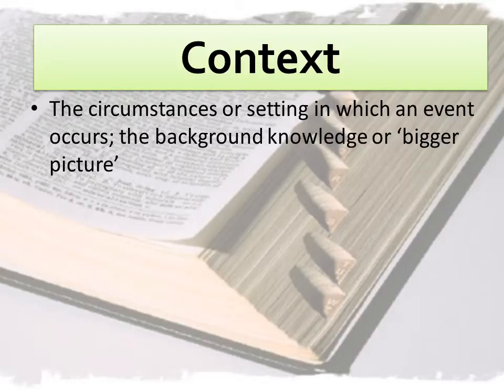Context is the circumstances or setting in which an event occurs. It's the background knowledge of the situation. When we learn about an event, in order to understand it fully, we have to know the context of the event, which means what happened leading up to the event and what else is happening at that time.